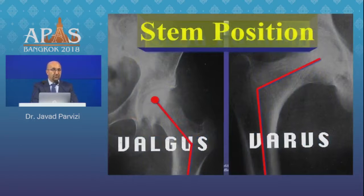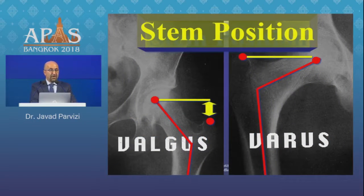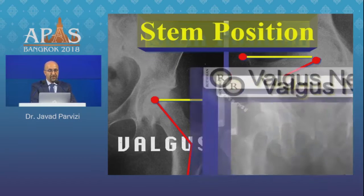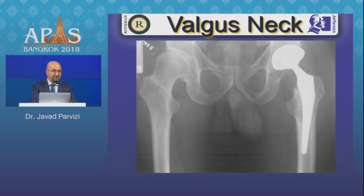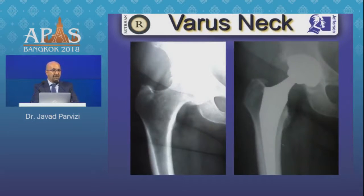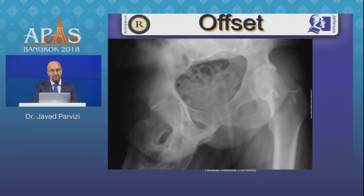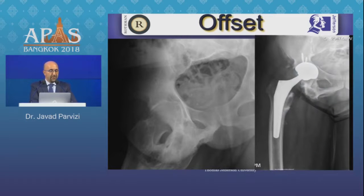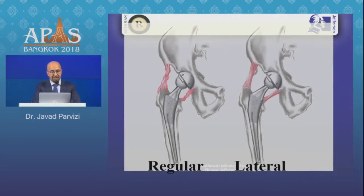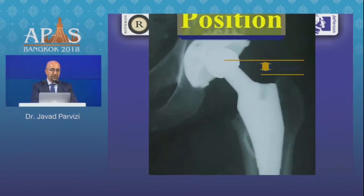On the femoral side, it's very important to look at offset. Not all patients have the same offset — we have varus necks and valgus necks, and if you don't restore that offset, the patient will run into problems. You need to give the patient the anatomical offset they had. The reason for offset is the stretch of the abductor mechanism, and soft tissue stability is very important for total hip replacement.